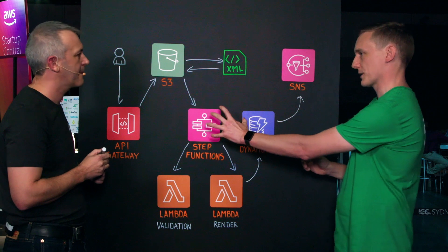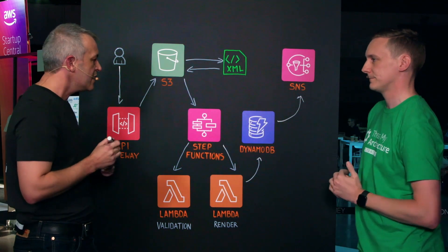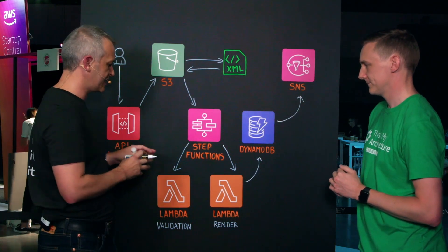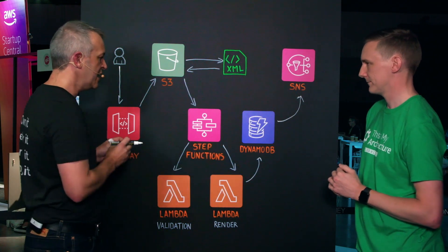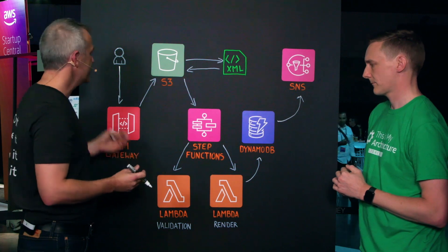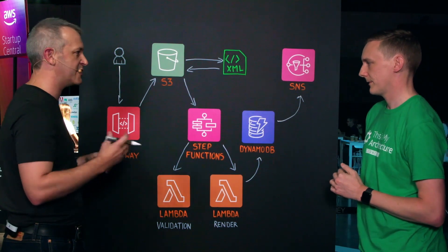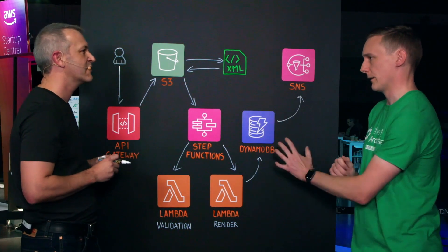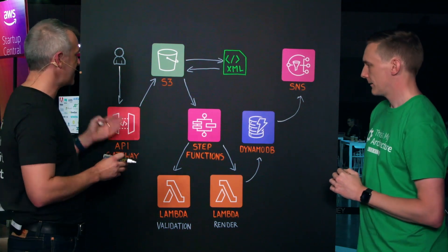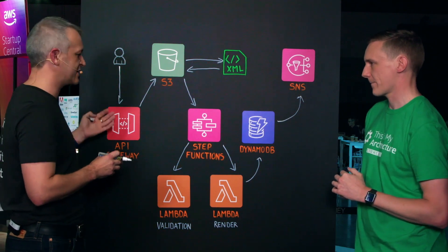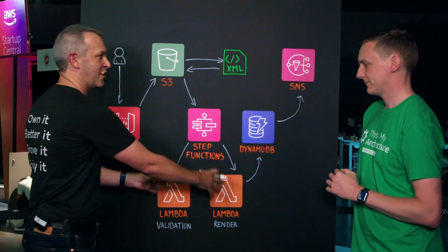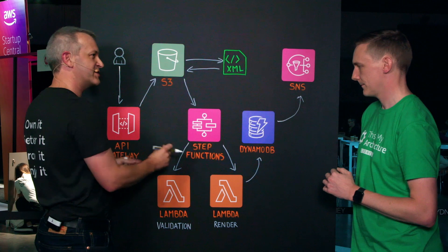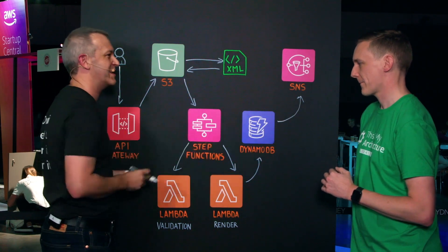Are you using step functions to manage your state exclusively or is there some state stored in Dynamo? There's a little bit of both. We've got state stored in step functions for the validation process, but the document can actually go through a number of iterations — a developer might need to upload another version of that document, and that particular state is being stored in DynamoDB. And imagine you've got multiple developers uploading things several times — we can take this whole process and parallelize that again. So we've not just got parallelization within the step functions, we can parallelize that step function process again as well.